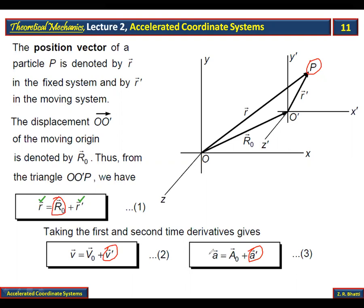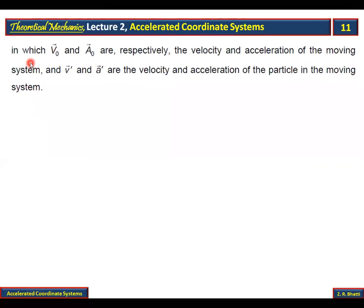So I think it is now clear what the difference is between the moving coordinate system and the fixed coordinate system. This is clear: the accelerated coordinate system is a non-inertial frame of reference. We are discussing only one thing here — pure translation, involving R-naught, V-naught, and A-naught.